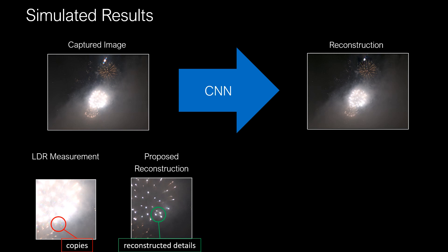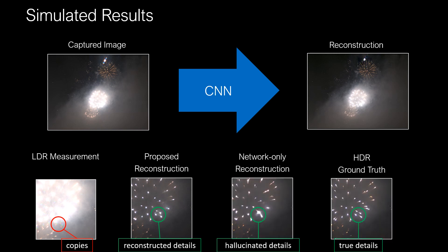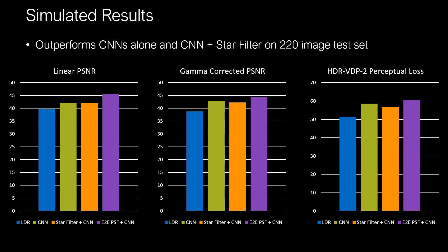See the three circled flares in the reconstruction. Without a PSF, a similar network can only hallucinate plausible details, which may look nothing like the ground truth — here, the network's reconstruction is missing a flare. Using extensive simulations, we show that our end-to-end approach outperforms the CNN-only approach and previous heuristic filters using a variety of error metrics, such as peak signal-to-noise ratio in the linear and gamma-corrected domains, and perceptual error metrics such as HDR-VDP2.